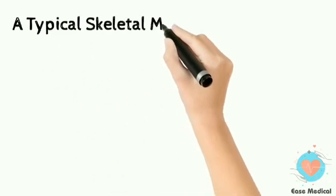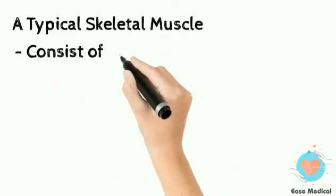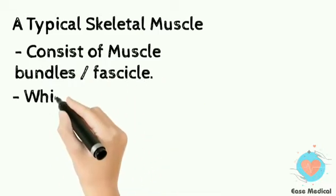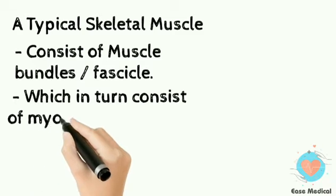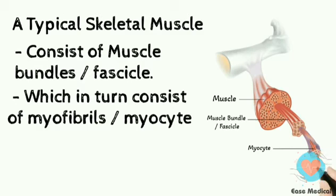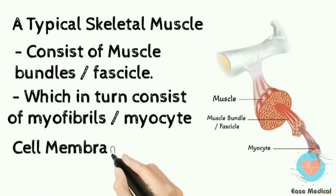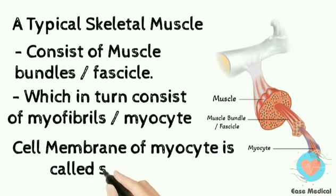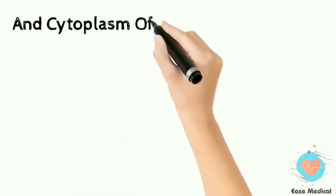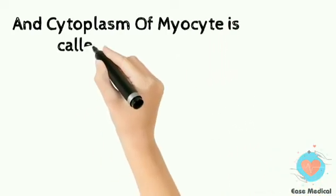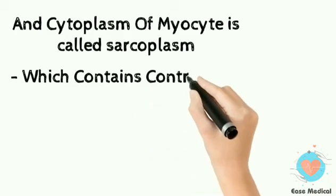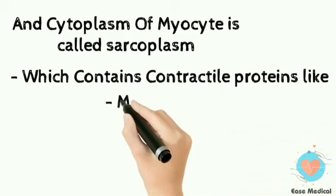A typical skeletal muscle consists of muscle bundles, which in turn consist of myofibrils. Myofibrils are also called myocytes. The cell membrane of a myocyte is called the sarcolemma, and the cytoplasm of the myocyte is called the sarcoplasm.